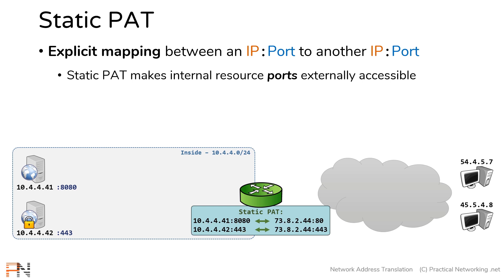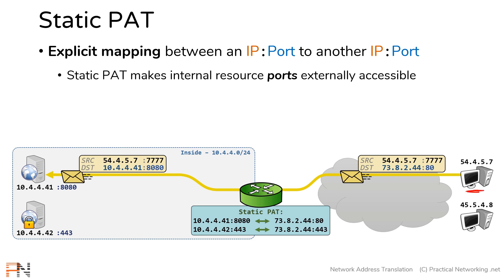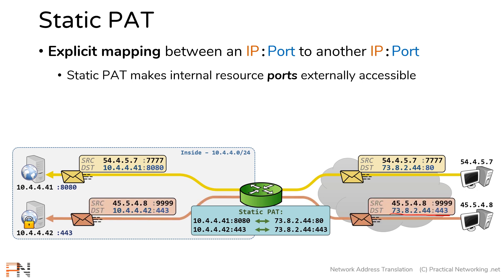Let's walk through what that looks like with packets. The first external host shoots a packet to destination IP 73.82.44, destination port 80. When this packet hits our router, it'll be matched against the static PAT configuration and the destination 73.82.44, port 80 will get remapped to IP address 10.4.4.1, port 8080. The other host shoots a packet to 73.82.44, port 443, and that'll match the configuration and be translated to 10.4.4.2, port 443.